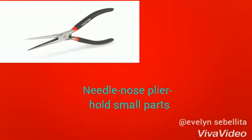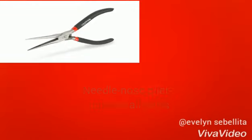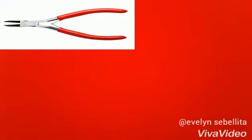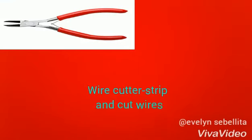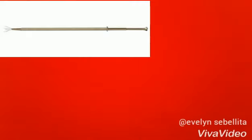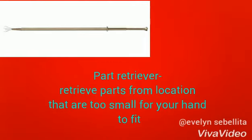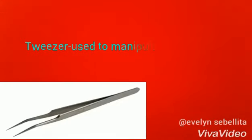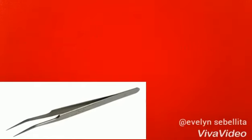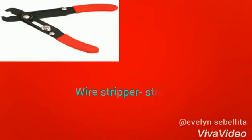Needle-nose plier: used to hold small parts. Wire cutter: used to strip and cut wires. Part retriever: used to retrieve parts from locations that are too small for your hand to fit. Tweezer: used to manipulate small parts. Wire stripper: used to strip wires.